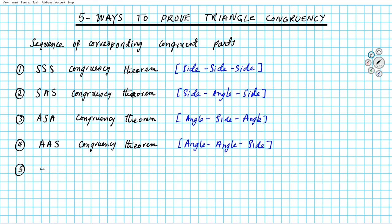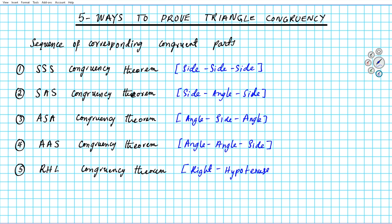Number five, last but not least, is the RHL congruency theorem. RHL is a special case that applies only to right triangles. The R stands for right. If you have two right triangles and their hypotenuse and just one pair of legs are congruent, that's sufficient to conclude the triangles are congruent. RHL stands for right angle, hypotenuse, and leg. Remember, every right triangle has a hypotenuse and two legs.